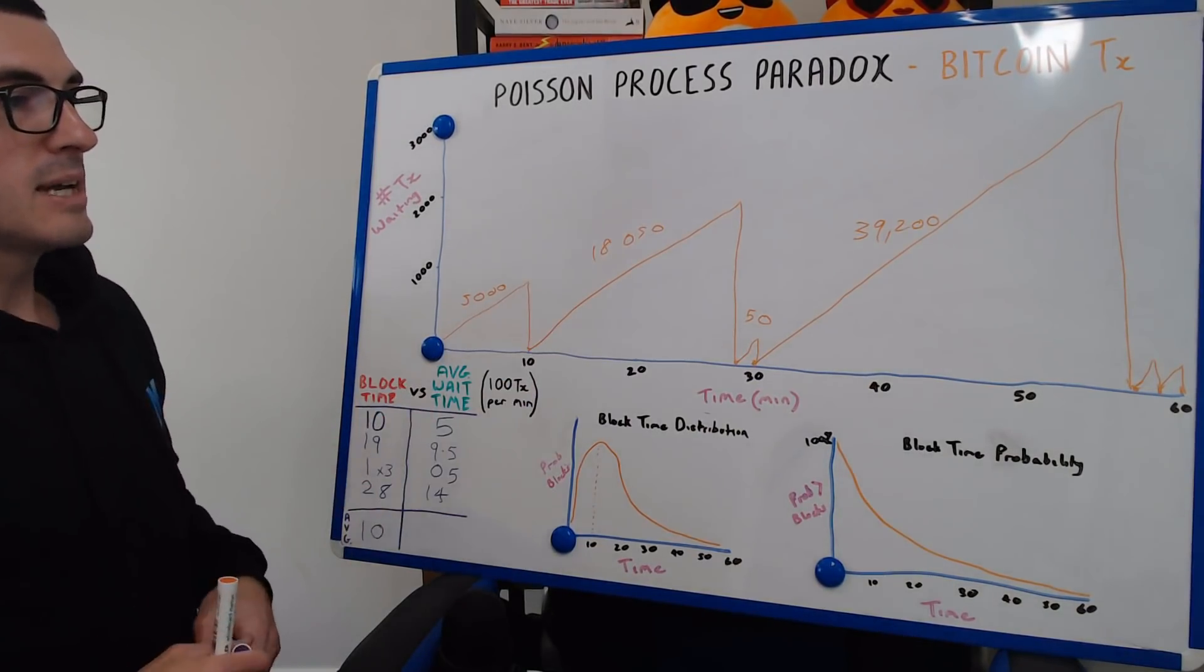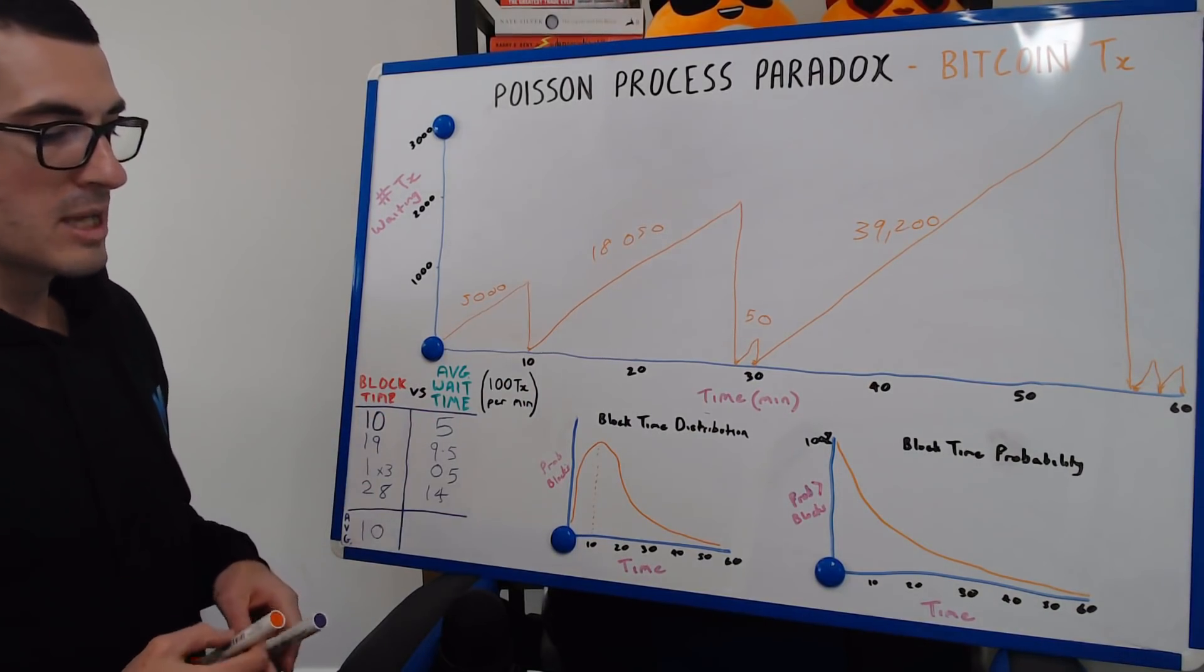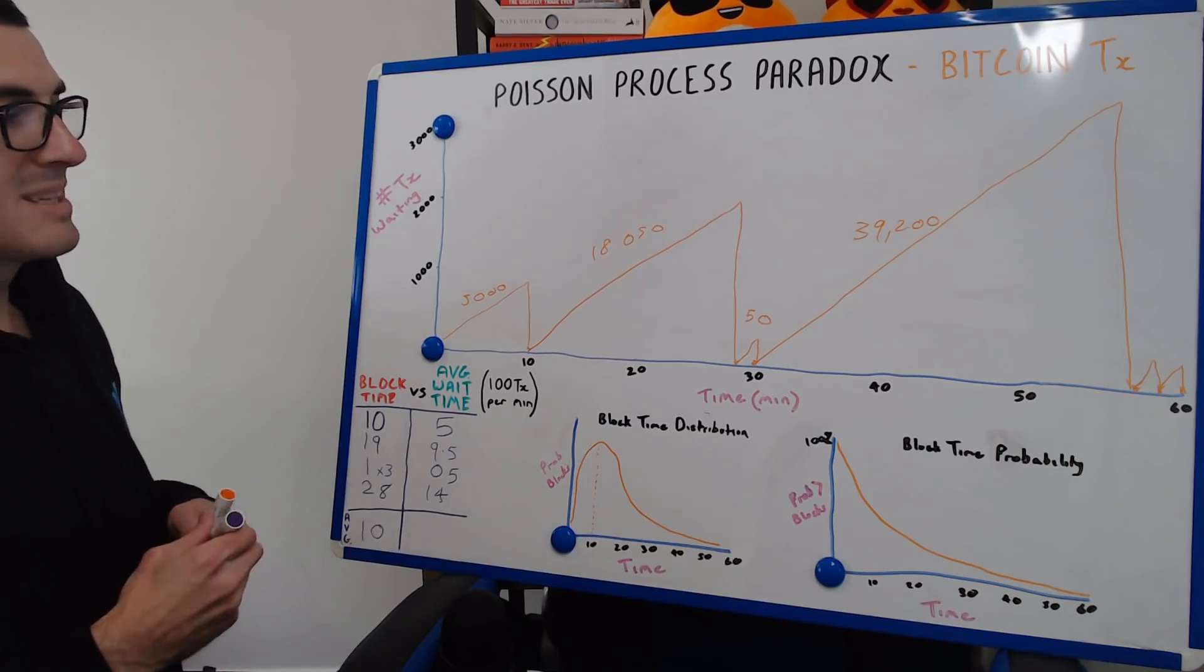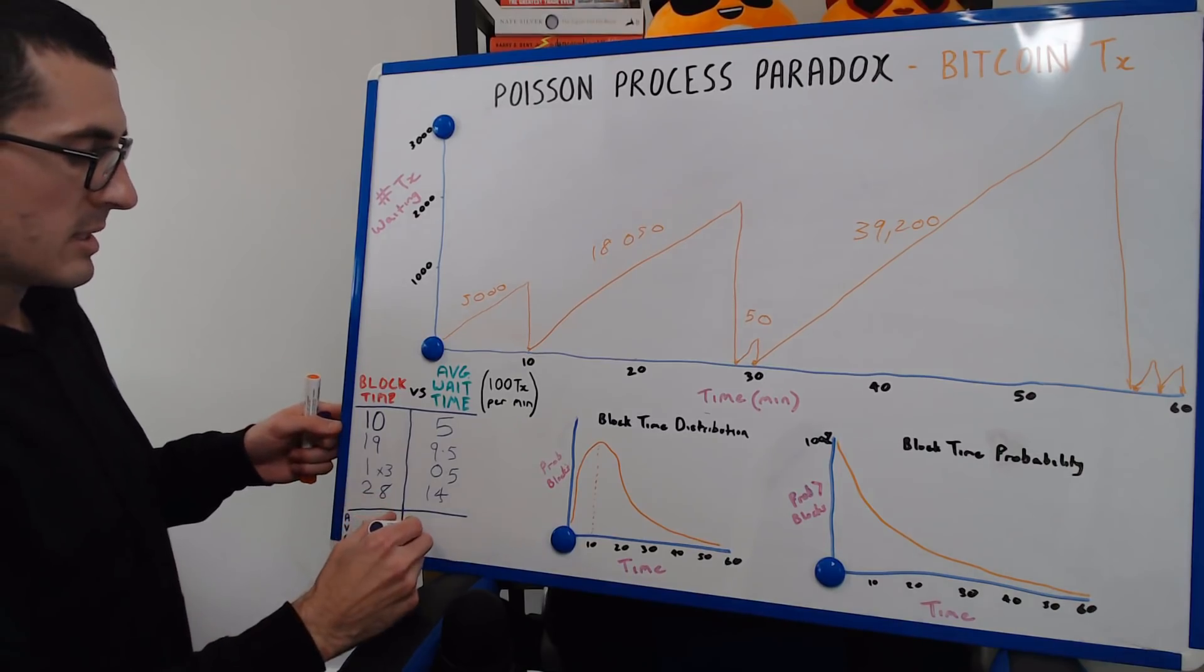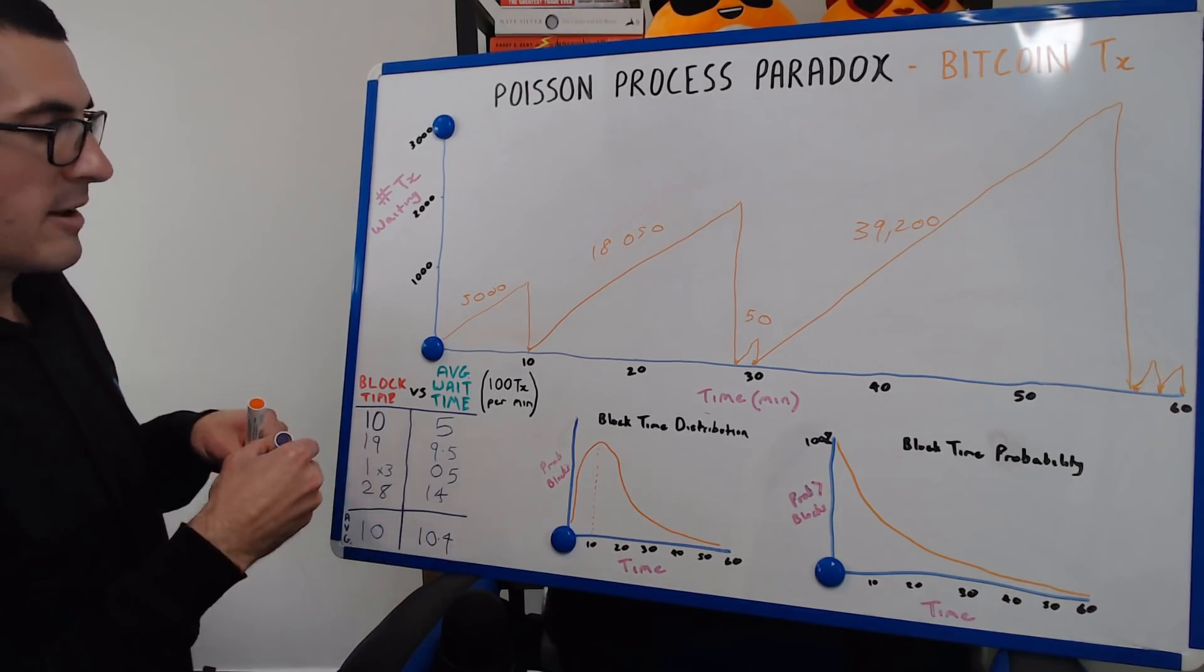So when we add those all together and divide by the time period, the average number we actually get is the average wait time is 10.4 minutes.